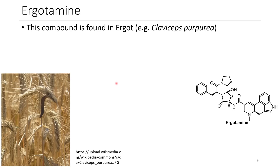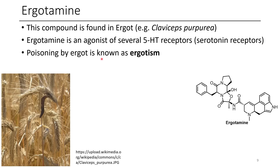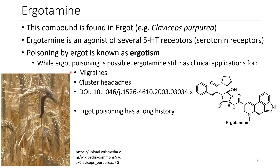The next one is ergotamine. You might be familiar with ergotamine because ergot poisoning has been something humanity is familiar with for quite a long time. Ergotamine is an agonist of several 5-HT receptors and is fairly non-selective. When you're poisoned by ergot it's called ergotism. Despite the fact that it can be a poison, it's also still used for clinical applications including migraines, cluster headaches, and it used to be used to induce birth if childbirth was not occurring.